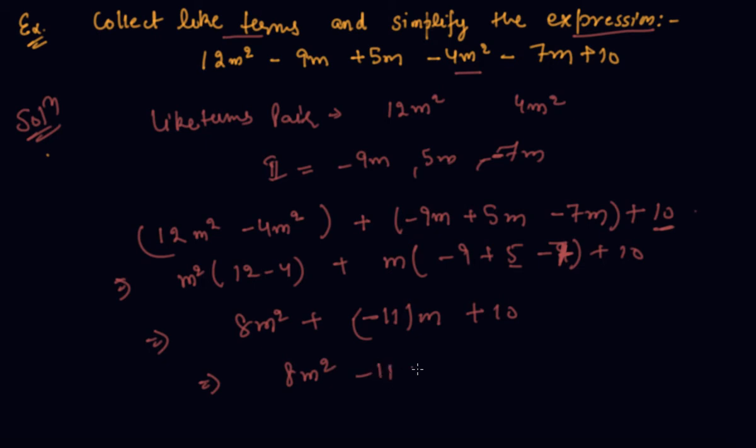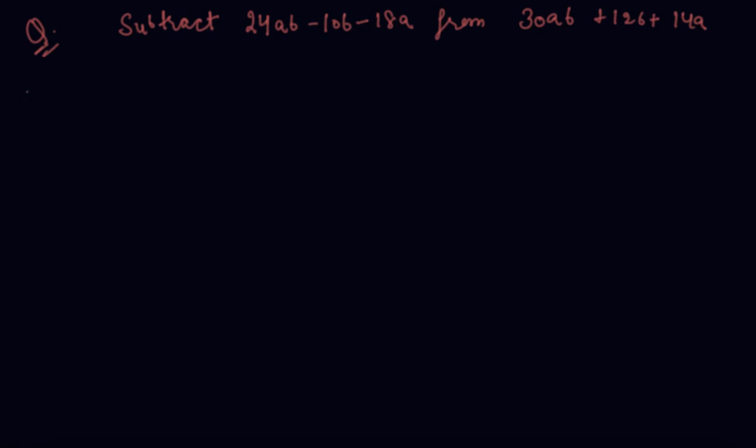So what I am getting, the answer is 8m² - 11m + 10. So students, this is one of the typical questions based on addition and subtraction of two algebraic expressions. I hope you guys are pretty clear about how to add and how to subtract two expressions. Let me give you one more example on subtraction of algebraic expression.